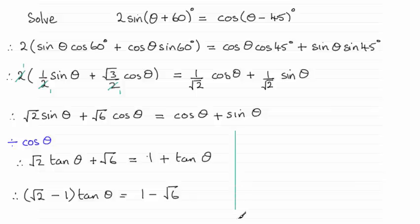So if I now divide both sides by (√2 - 1), I therefore have tan θ equals (1 - √6)/(√2 - 1).